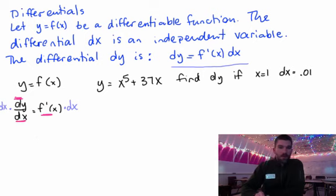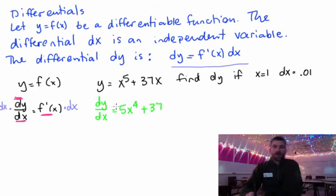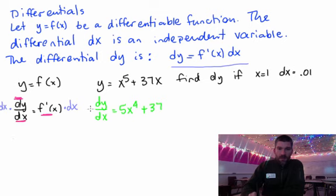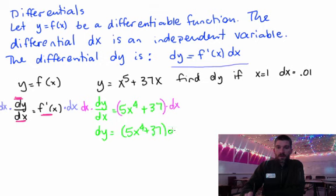So all I'm going to do is take the derivative here. Let's say dy dx. And what does that equal? That equals 5x to the fourth plus 37. Okay, there's that guy. But I need dy. So I'm going to multiply both sides by dx. And it's not just 37 times dx. It's the whole thing times dx. So dy is equal to 5x to the fourth plus 37 times dx.